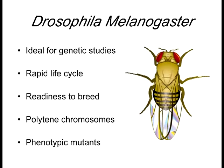Drosophila are ideal for genetic studies with a very rapid life cycle. They have four huge polytene chromosomes where you know exactly where the genes are found — not like us with 46 chromosomes. One of the biggest advantages of Drosophila is being able to manipulate their genetics and see various mutations. They're very easy to mutate and see what happens, used extensively for genetic breeding studies as well as genetic manipulation studies.